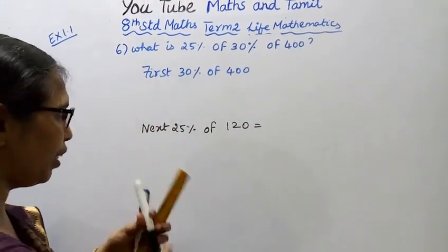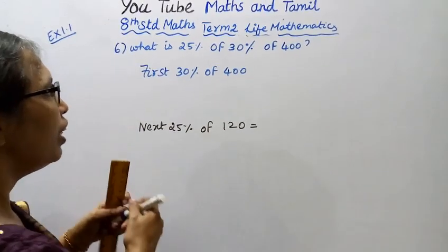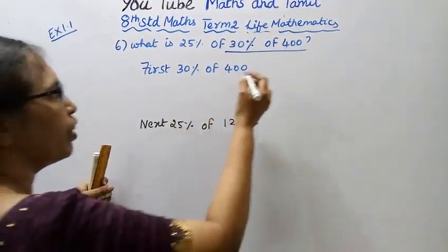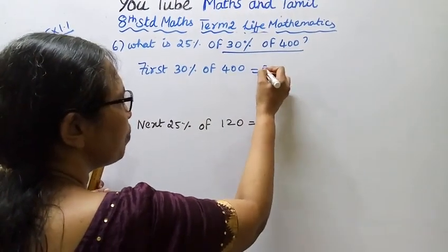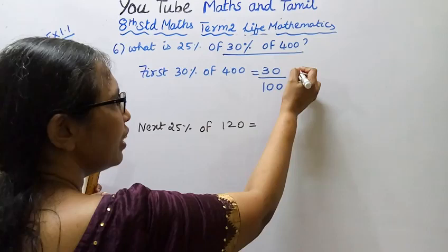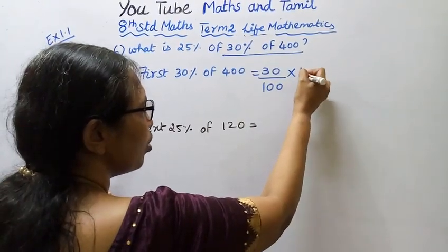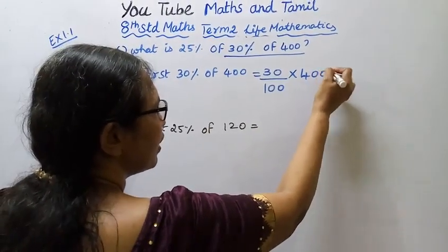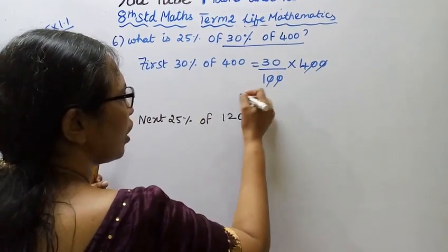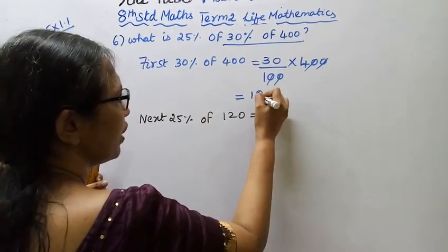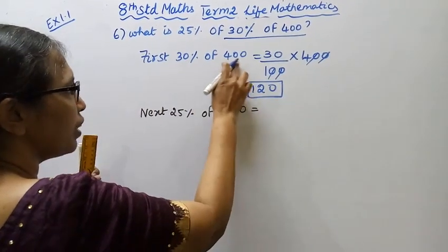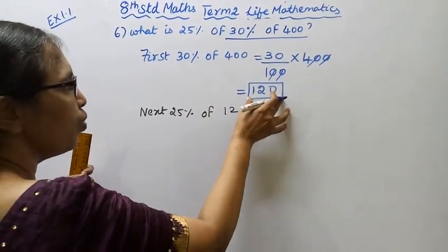First, we will find what is 30% of 400. 30% is 30 by 100, into 400. Cancel the zeros, cancel further, and we get 120. So 30% of 400 is 120.